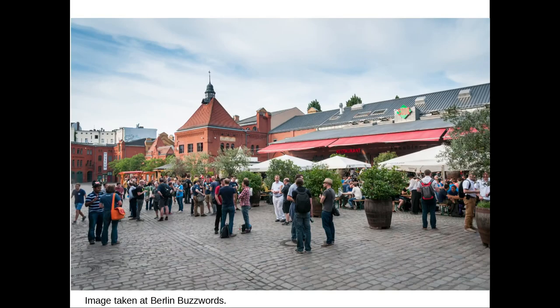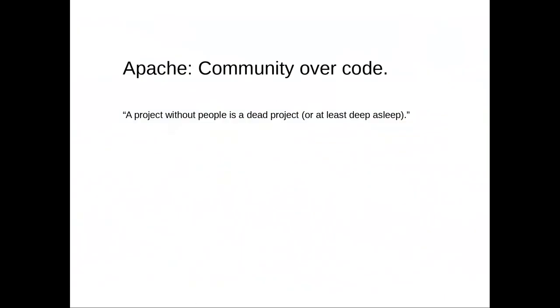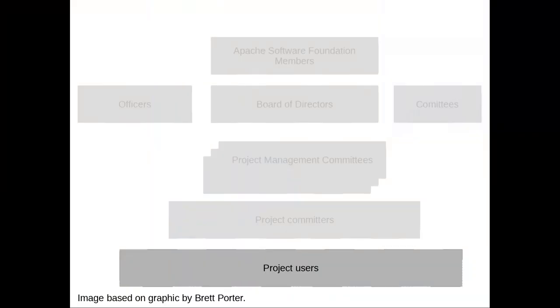Let's continue with the messier aspects of open source — the people aspects and the leadership aspects. There's one mantra at the ASF: community over code, which I would translate as a project without people is a dead project, or at least a very deeply sleeping one. That's why there is such a focus on community at the ASF. The community includes downstream users — that's where ASF projects recruit new people from, and that's how all communication is supposed to be set up.